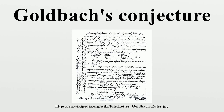Currently, the best-known result is due to Olivier Ramare, who in 1995 showed that every even number N ≥ 4 is in fact the sum of at most six primes. In fact, the proof of the weak Goldbach conjecture by Harold Helfgott directly implies that every even number N ≥ 4 is the sum of at most four primes. Chen Jinggrun showed in 1973, using the methods of sieve theory, that every sufficiently large even number can be written as the sum of either two primes, or a prime and a semi-prime.